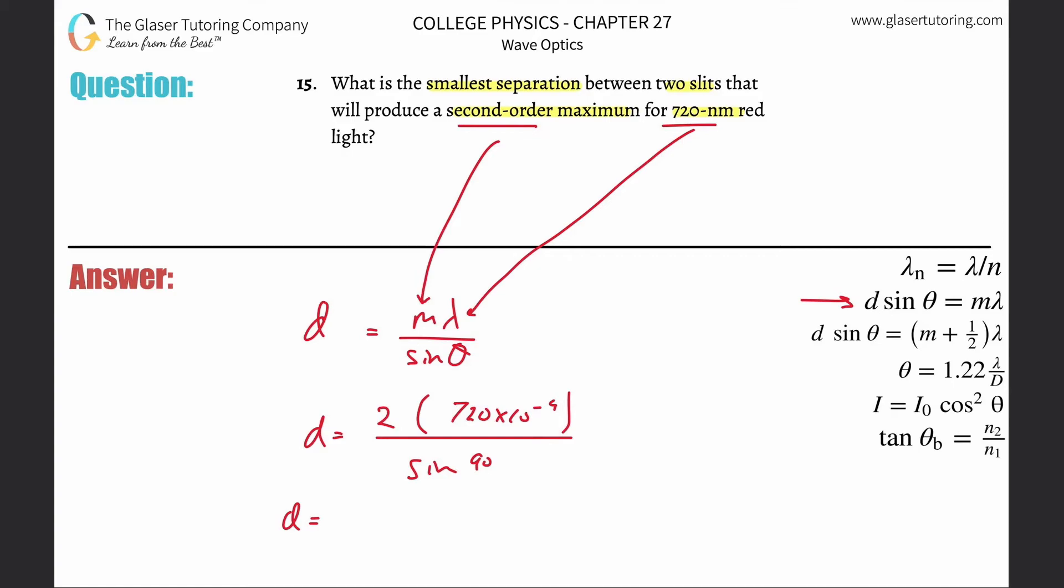So it's just 2. Do you technically need to convert to meters? Not really, but it's habit. So this is 2 times 720 times 10 to the minus 9th. That's it. This is 1.44 times 10 to the minus 6th meters, about 1.44 micrometers.